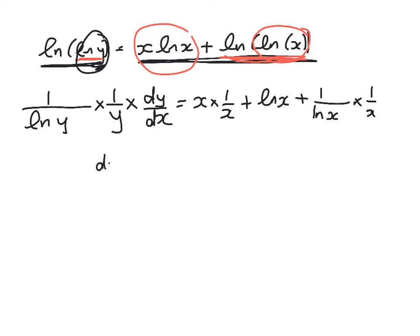So cleaning all of that up, we get dy by dx is equal to y log y times 1, plus the log of x, plus 1 over x log x.